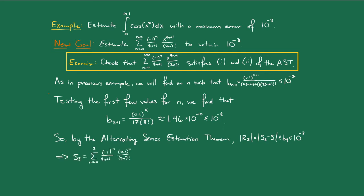Thus, S₃, the sum from n=0 to 3 of our series, which is approximately 0.990046190, is within 10⁻⁸ of the actual sum of the series, which equals the integral we originally wanted.